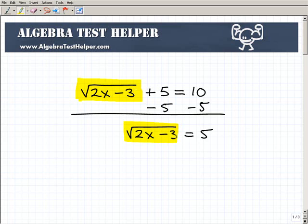So I'm going to just highlight that again, and so now I rewrote this equation as the square root of 2x minus 3 equals 5. All right, so step 1 is done.